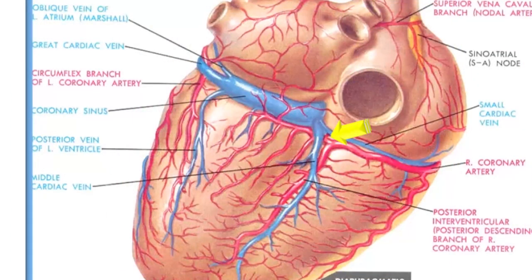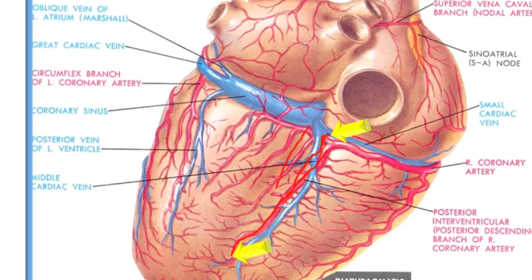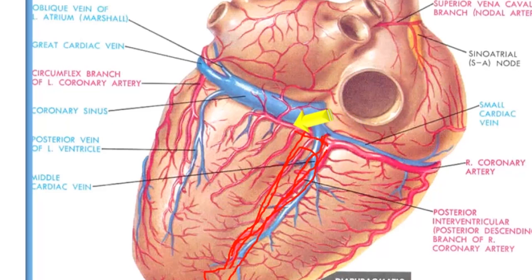The right coronary artery will also continue to give rise to another very significant branch called the posterior interventricular branch. This branch will descend in the posterior interventricular groove and move towards the apex of the heart. After giving off this large posterior interventricular branch, the artery will continue as the terminal branch — also called the left ventricular branch of the right coronary artery — which continues for a short distance in the coronary sulcus.